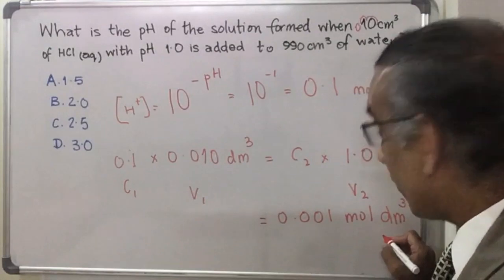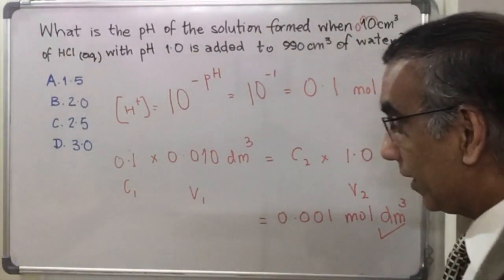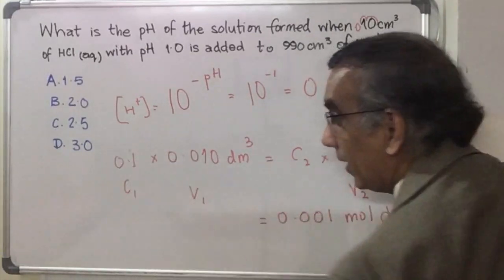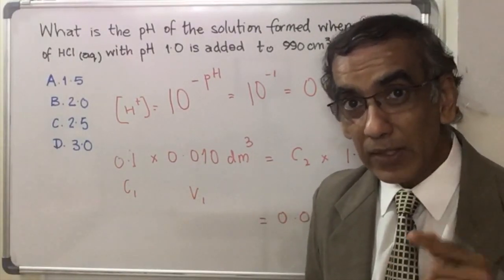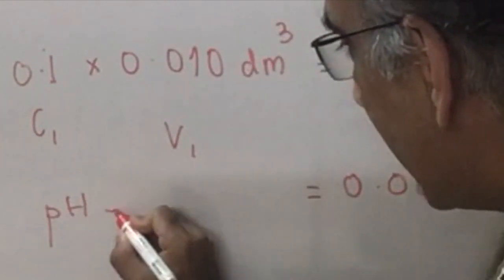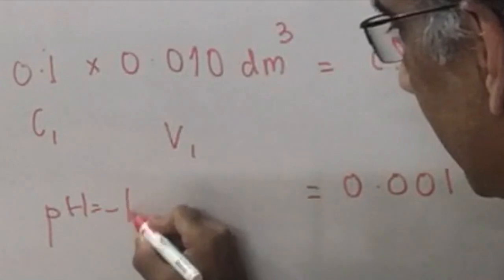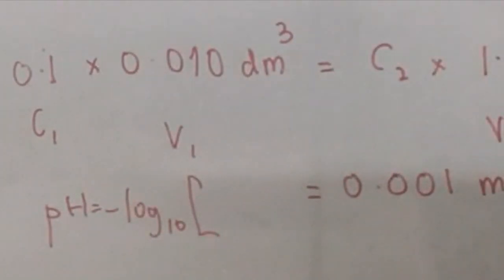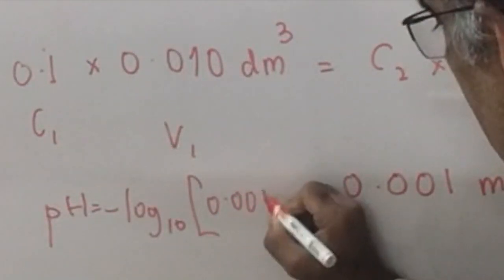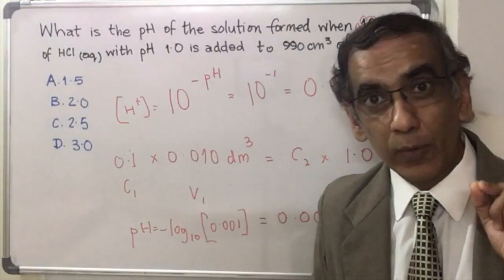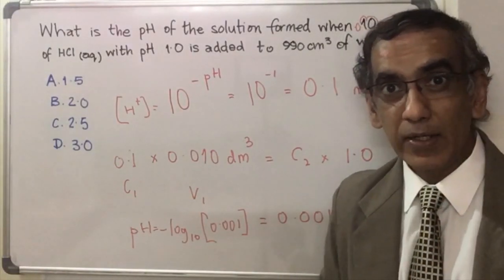What you have here is not a pH though — it's a concentration. How do you go from this concentration to a pH? You must do that mentally. pH is equal to the negative log to the base 10 of the molar hydrogen ion concentration, which is 0.001. And in your head, you should know that that is 3.